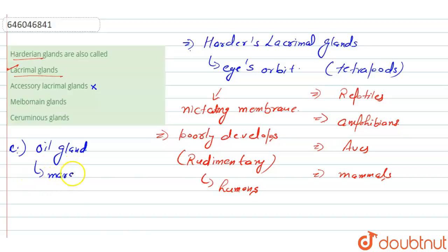Next is the ceruminous glands. So what are the ceruminous glands? These glands are located in the ear, or we can say these are located in the cartilaginous...